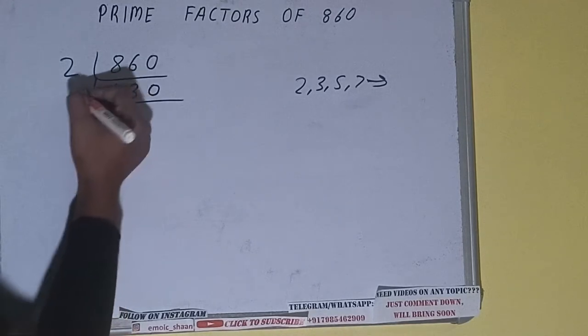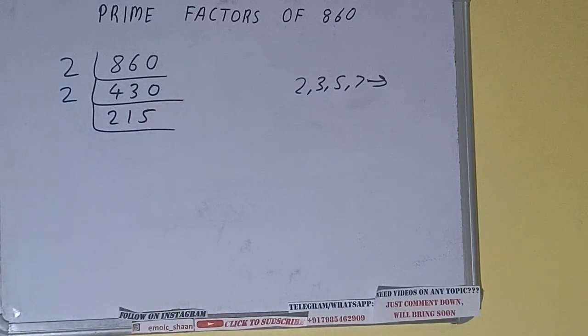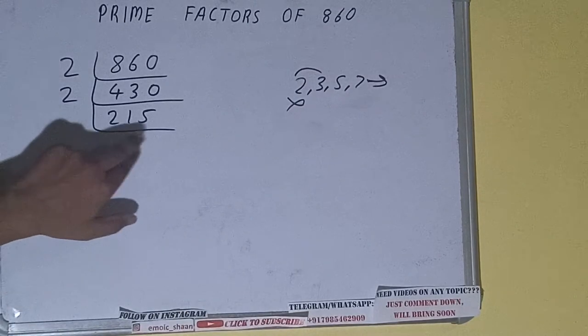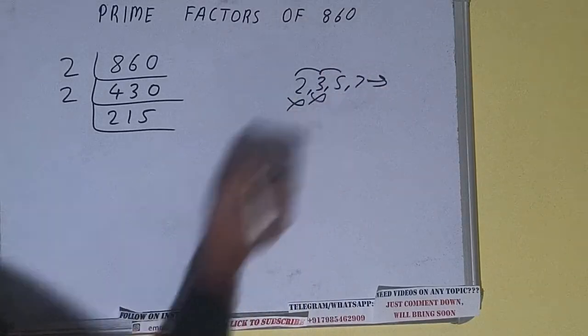Now is 215 further divisible by 2? The answer is no because the number is odd. So we'll check with the next lowest prime number, that is 3. 3 sevens are 21, 3 ones are 3, 2 left. It is not divisible by 3 also. Let's check with...